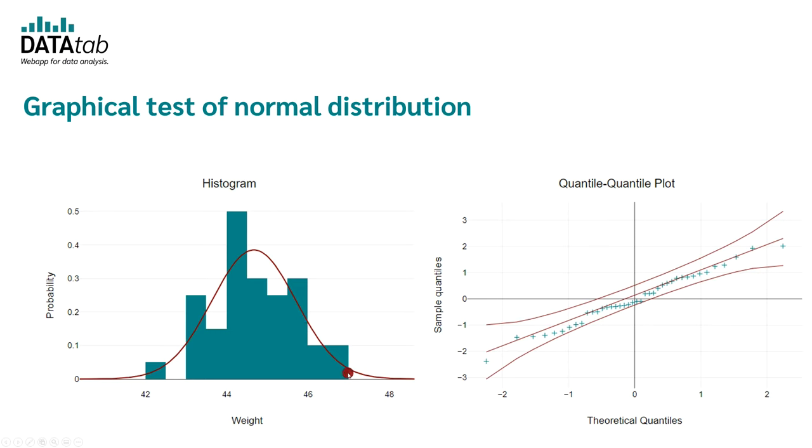If you use the histogram, you plot the normal distribution in the histogram of your data and then you can see whether the curve of the normal distribution roughly corresponds to that of the normal distribution curve.